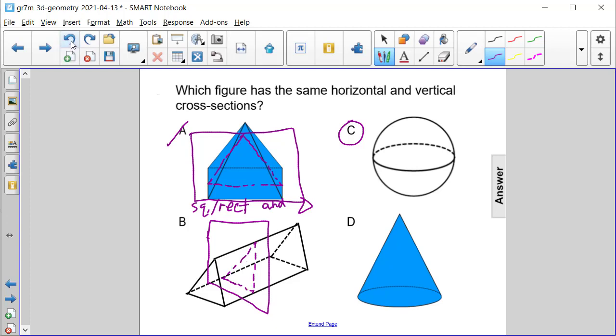And then if we were to do it the other way, more of a horizontal plane, we would end up getting this rectangle in between, right in here. So this is a triangle and a rectangle. So these are not the same.